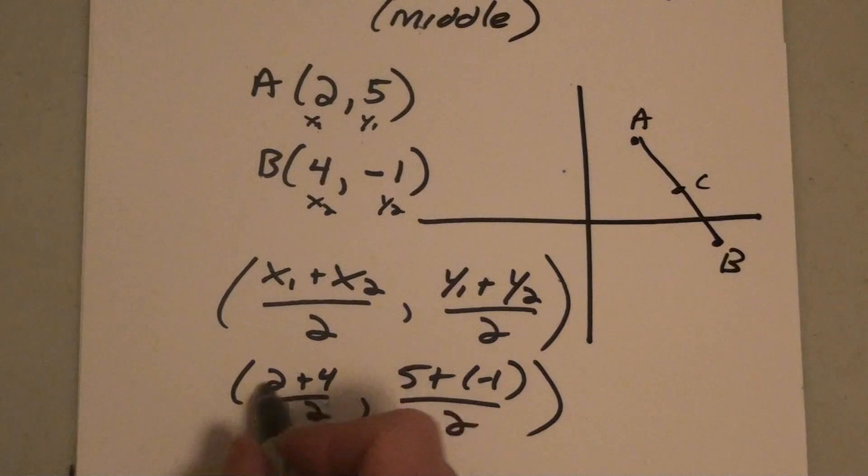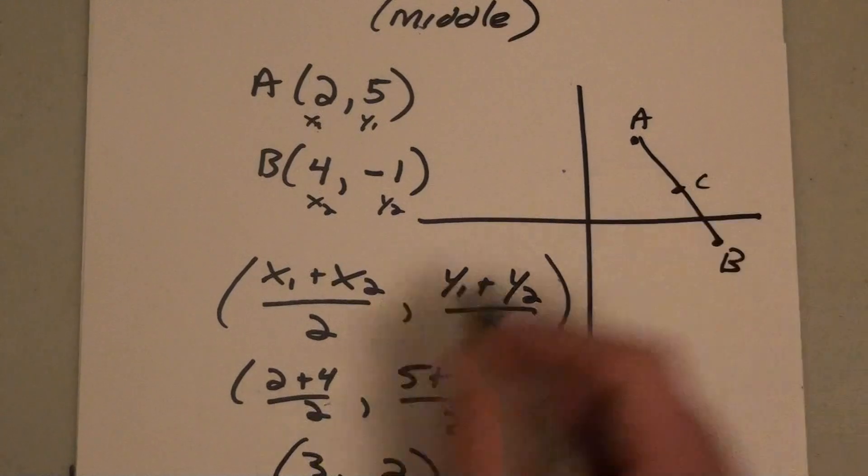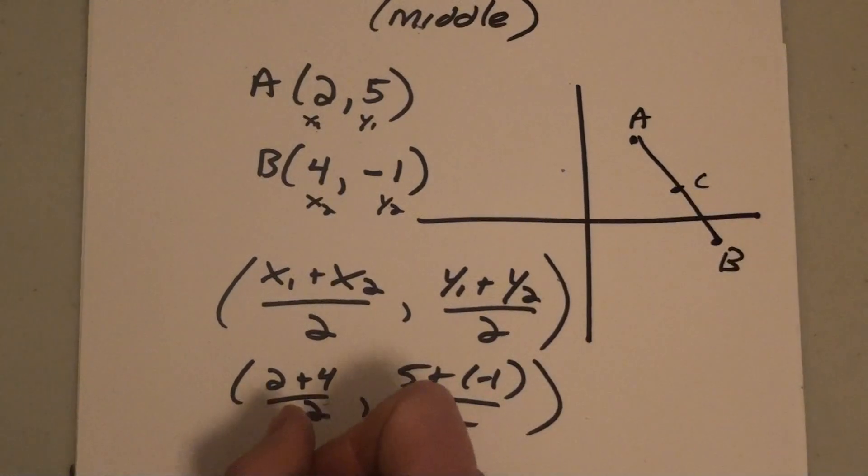I want to do a little math, so it'll be 2 plus 4 is 6, 6 divided by 2 is 3, and here I want to have 5 plus negative 1 which is 4, 4 divided by 2 is 2. And the point 3,2 is your midpoint, which I'm going to call point C.